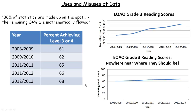In this tutorial we're going to take a look at uses and misuses of data. Through a few examples, here's a little quote I found on the internet: '86% of statistics are made up on the spot, the remaining 24% are mathematically flawed.' That's just a funny little quote — notice that those two numbers don't add to 100, they add to 110%.